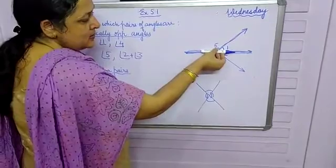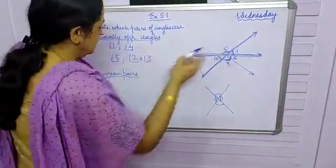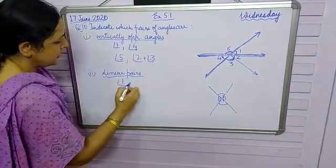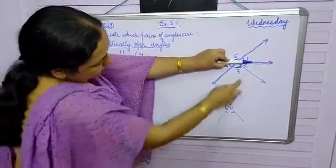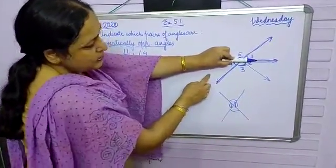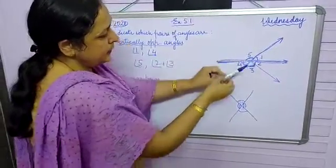If I say this, then angle 1 and angle 5, they together are making the straight line. So first pair is angle 1 and angle 5. Now if I consider the angles below this, now I have three angles. And the condition is there should be two angles. So no, they don't form a linear pair.